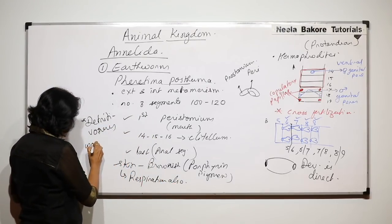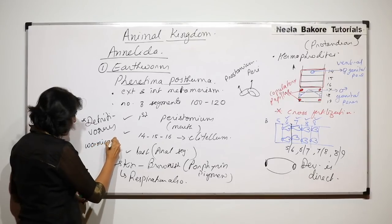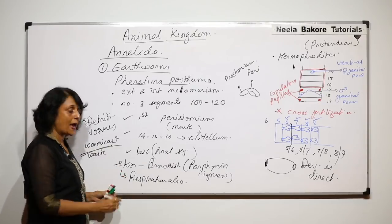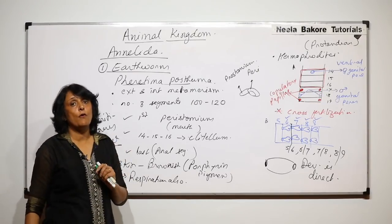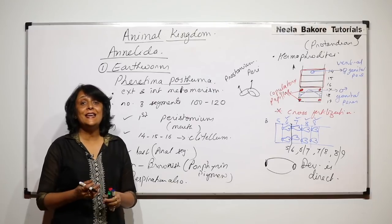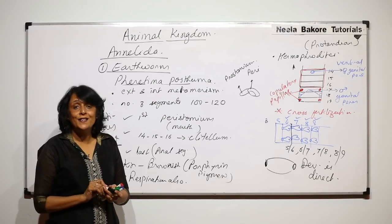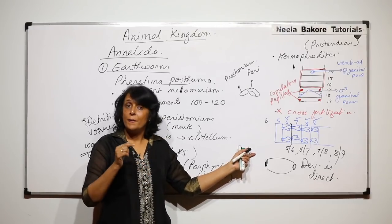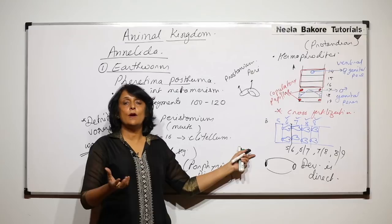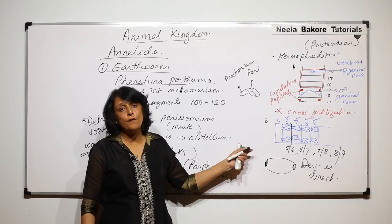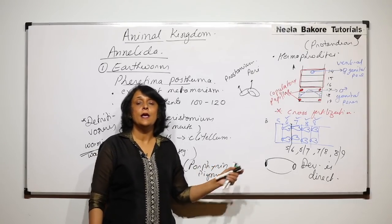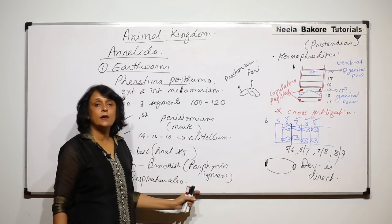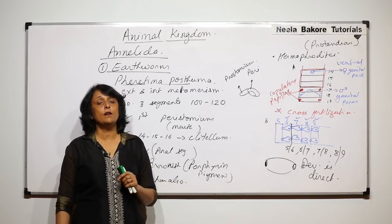Because they feed on decomposing organic matter, earthworms are known as detritivores. The waste they release is known as worm casting, which is very good for the soil as it increases soil fertility. Additionally, the burrows they make help in aeration of the soil, making them very useful in farming.